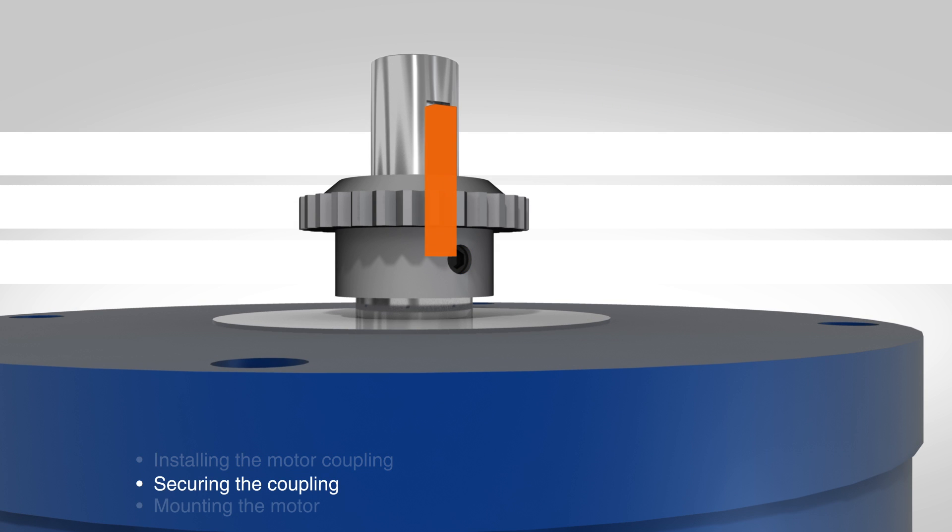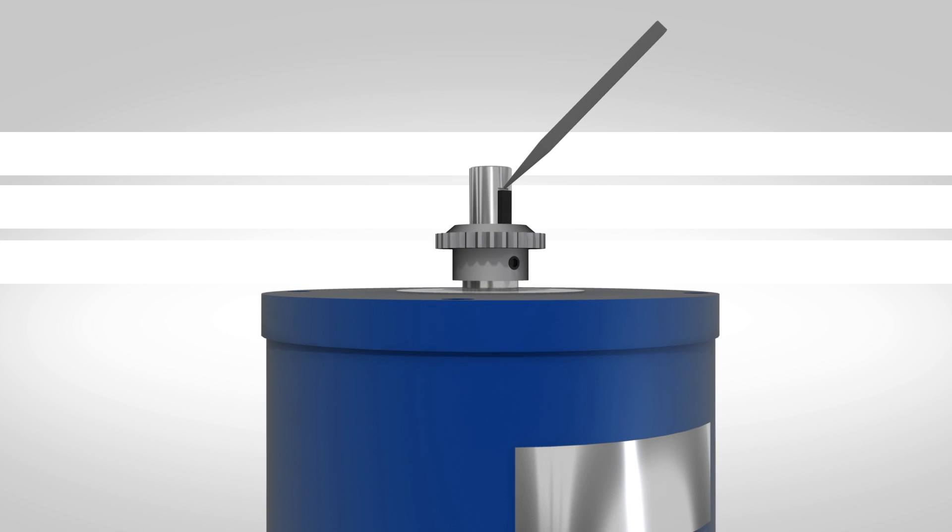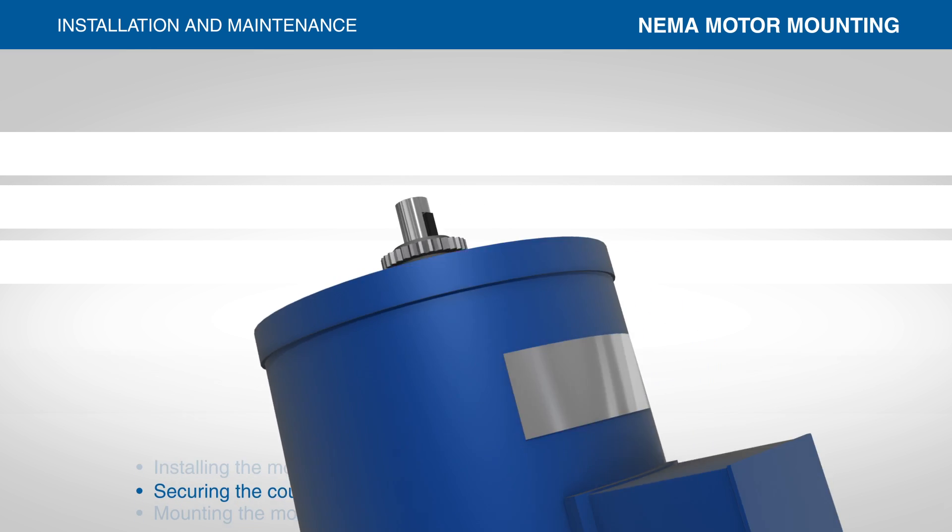For ease of installation, secure the motor shaft key. Staking near the end of the keyway or on the sides of the key works well, or use a temporary adhesive.